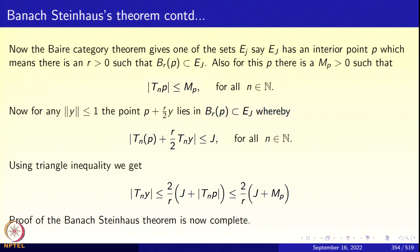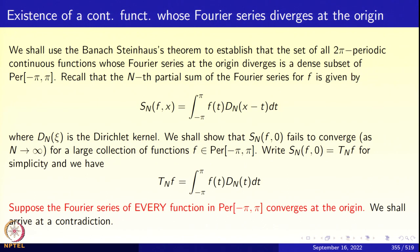Now that we have finished the proof of the Banach-Steinhaus Theorem, we must use it to solve a problem in Fourier series. We are going to prove the existence of a continuous function whose Fourier series diverges at the origin. We take a point in the interval (−π, π) and we can find a function which is continuous throughout (−π, π) but whose Fourier series diverges at that chosen point. For simplicity, we choose the point to be the origin.